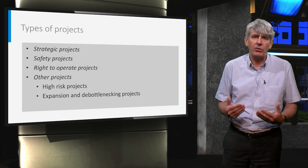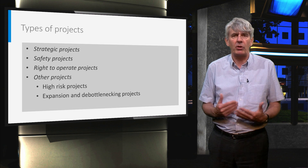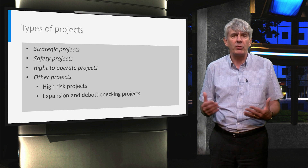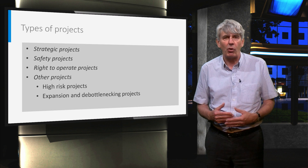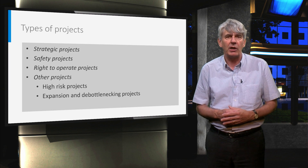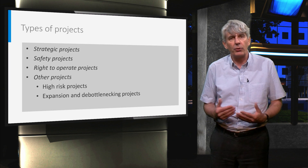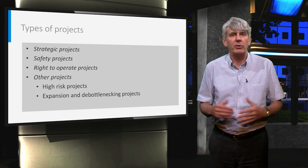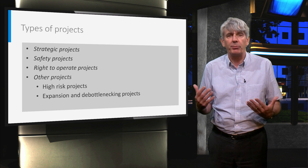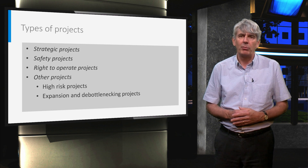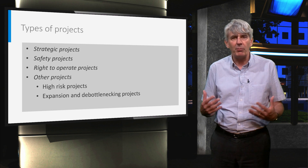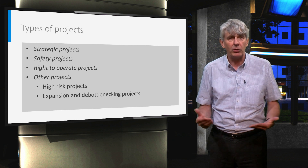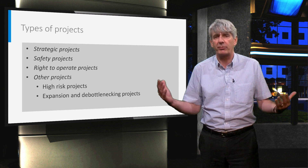Safety projects serve to enhance the safety of production conditions. Execution is based on other considerations than profitability. In order to come up with economic attractiveness, the potential savings of prohibiting accident costs can be taken into account in the profitability calculations. Third, there are the right-to-operate projects. They have to be executed to stay within the limits of the permits granted. They are also referred to as must projects. Although executing these projects may be regarded as spending money with no revenues as a result, there is a bottom line profitability because discontinuing the operation often has a much higher financial impact.